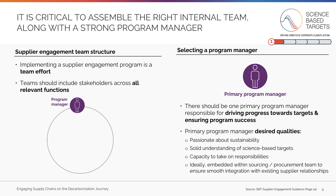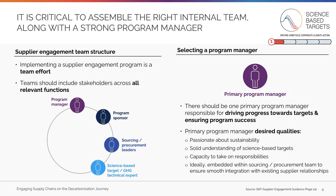Key roles include a program manager, a program sponsor, a sourcing and procurement leader, a technical expert on science-based targets and greenhouse gas, a communications lead, a data management and analytics lead, and a legal lead. Depending on the makeup of your company, you may choose to fill multiple of these roles with the same individual. Additional details on these roles can be found in section 5 of the guidance.